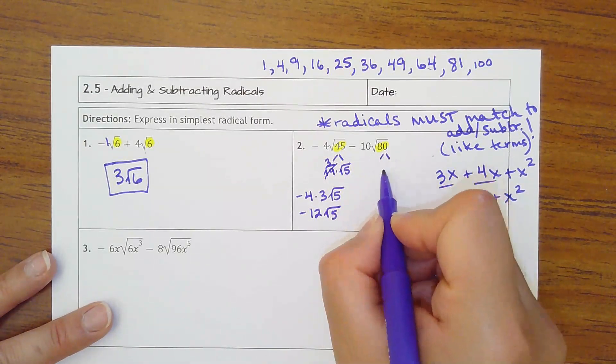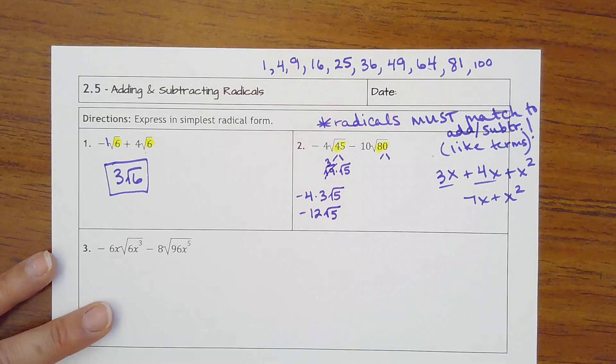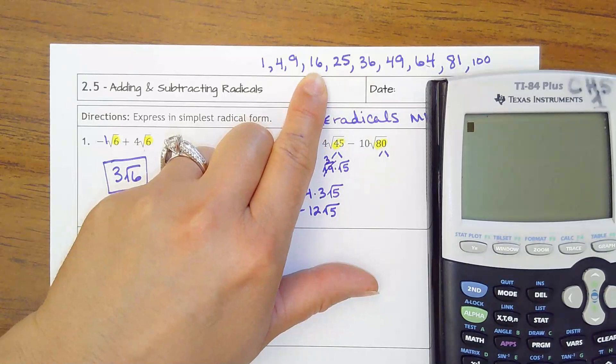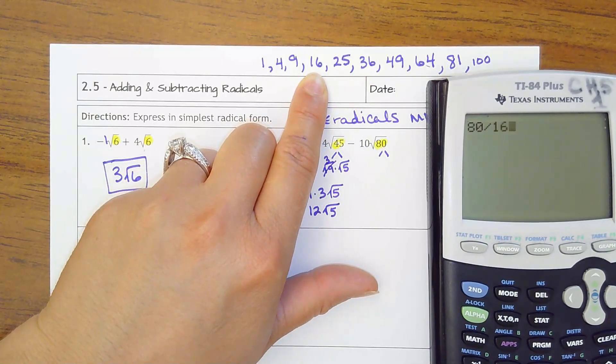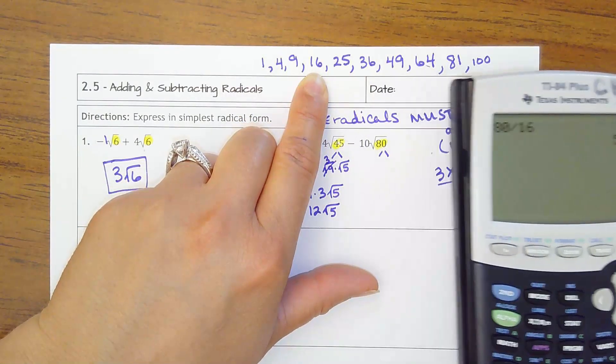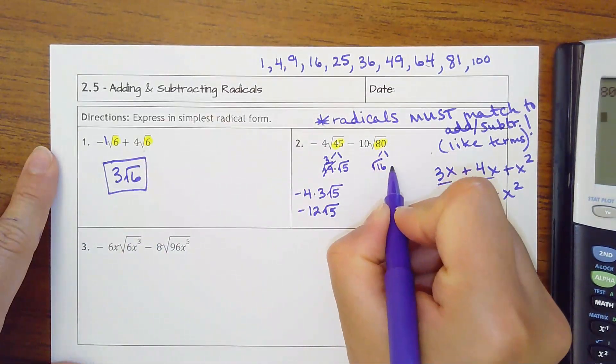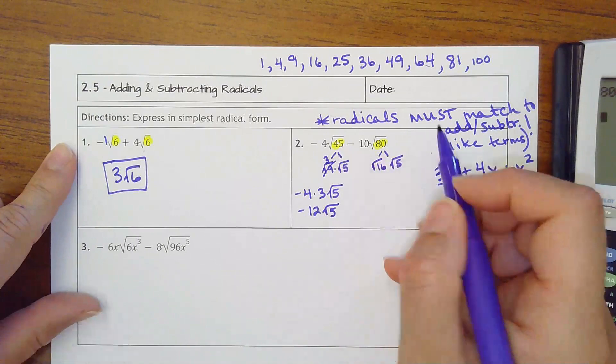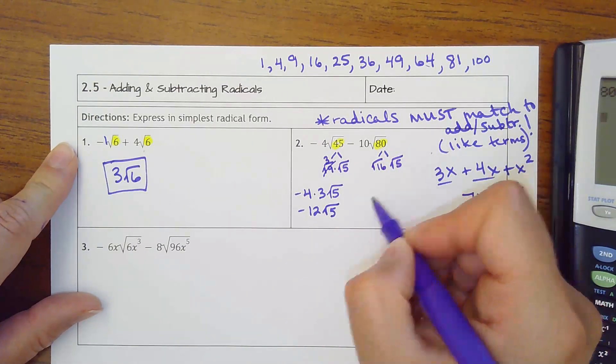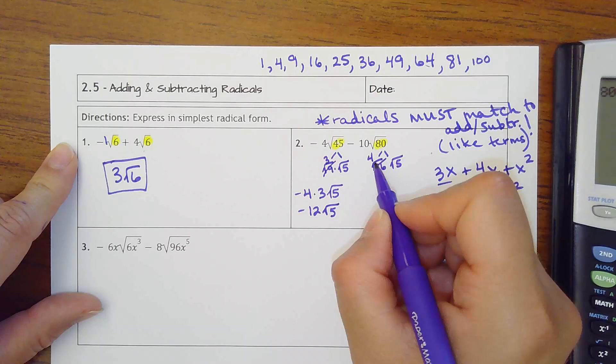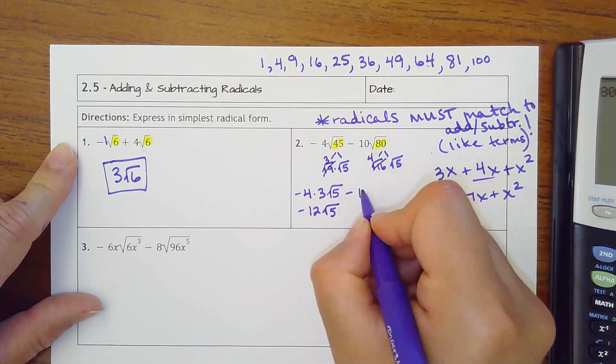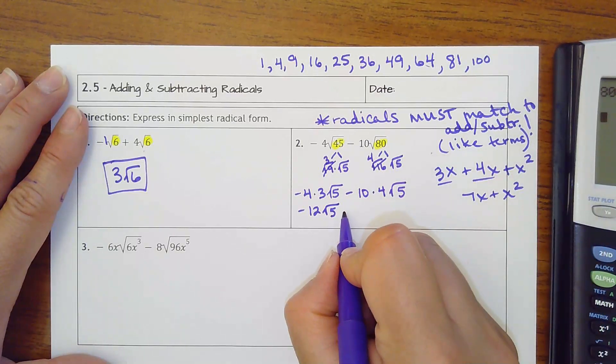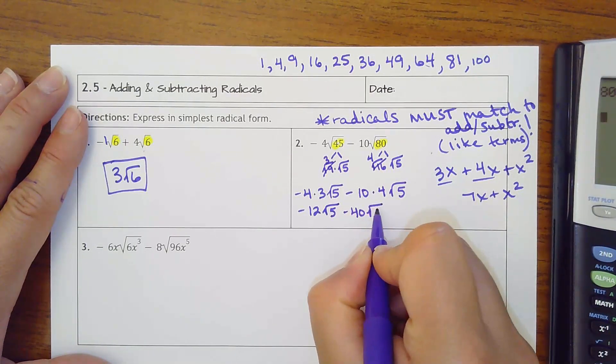Here, 80 can divide by more than 4. Start at the top. 80 can divide by, I believe, 16. Yeah, 16 times 5. Hint: a lot of these will become like terms, so you should try to end up with a square root of 5 to match this one. Square root of 16 is 4, so I'm going to have negative 10 times 4 square root of 5. Negative 10 times 4 is negative 40 square root of 5.